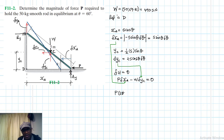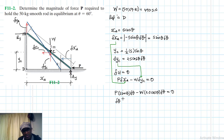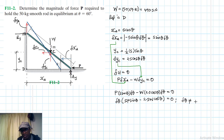Substituting the expressions: P · (5 sin θ · δθ) − W · (2.5 cos θ · δθ) = 0. Factoring out δθ gives: 5P sin θ − 2.5W cos θ = 0. Since δθ is not equal to zero, the bracketed expression must equal zero.